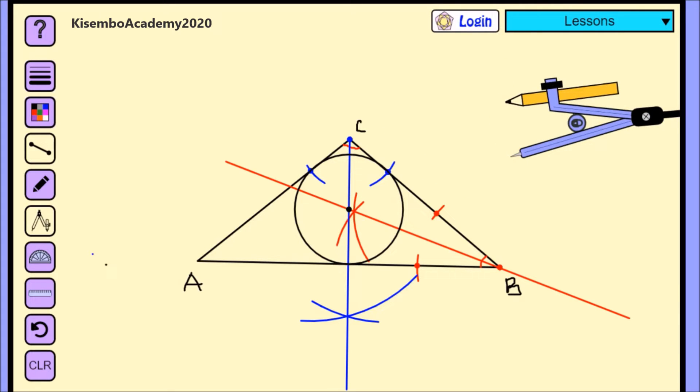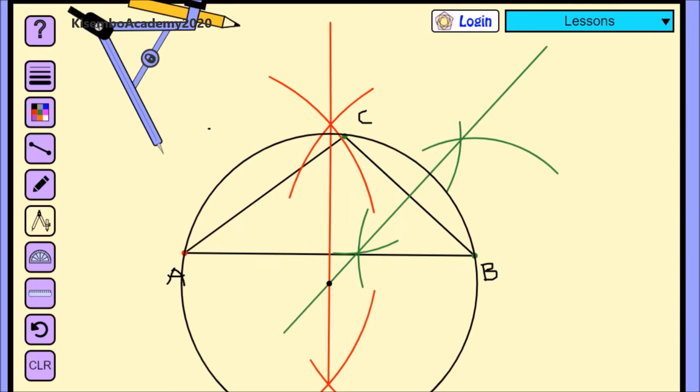So now let's move on to circumscribing. Again, circumscribing means that we are going to do the same, only that this time we are not bisecting angles, we are bisecting any two lines. So we have this triangle ABC, and we want to draw a circle that touches the vertices of this triangle, or we want to circumscribe.